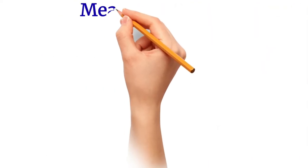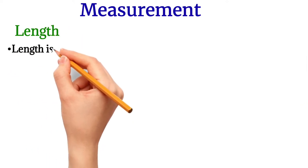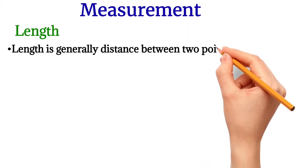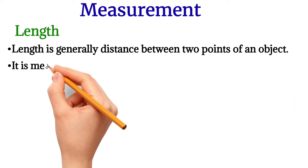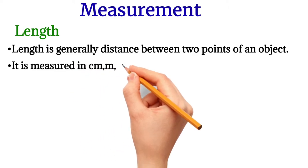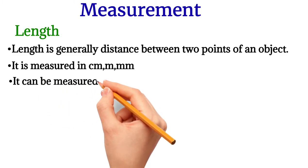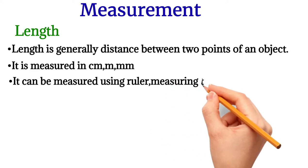Next we move on to measurements. Measurements can be taken for length, mass, volume, and more. Length is generally the distance between two points of an object. Length is measured in centimeters, meters, or millimeters, using a ruler or measuring tape.